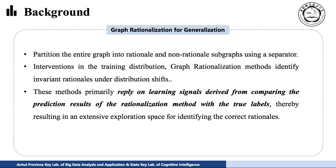We can also use graph rationalization to solve the OOD problem. We first separate the graph into rationale and non-rationale subgraphs, then interpolate rationales within the training distribution. Graph rationalization methods identify environment rationales under distribution shifts. However, these methods rely on learning signals derived from comparing the prediction result of the rationalization method with the true labels, resulting in an extensive exploration space for identifying the true rationales.